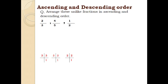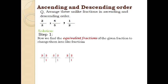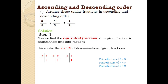Question: arrange these unlike fractions in ascending and descending order. The fractions are 2 over 3, 4 over 5, and 1 over 2. Step 1: find the equivalent fractions to change them into like fractions. Take the LCM of the denominators 3, 5, and 2. By prime factorization, the LCM of 3, 5, and 2 is 30. The common denominator is 30.